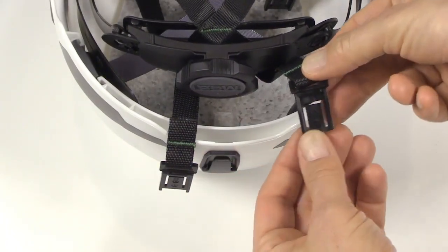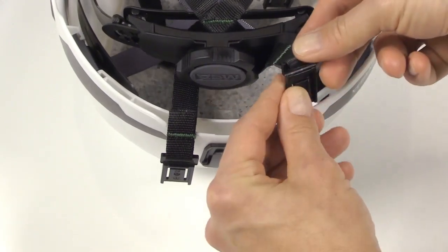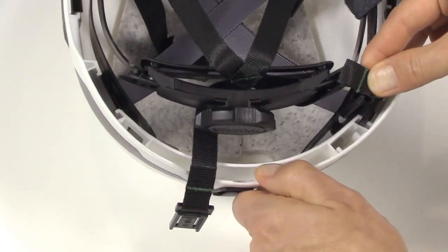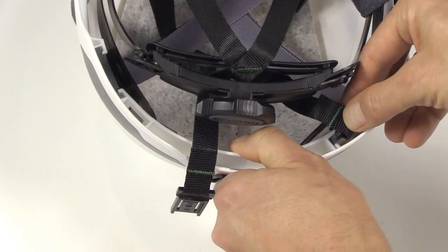This is the back of the chin strap clip and this is the front. Ensure that the front of the chin strap clip is facing the interior of the helmet when you click it in.